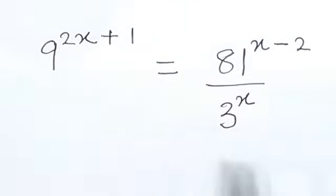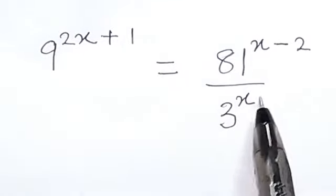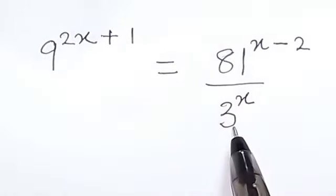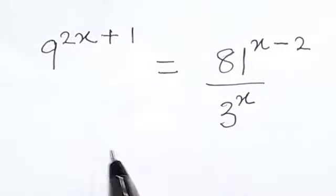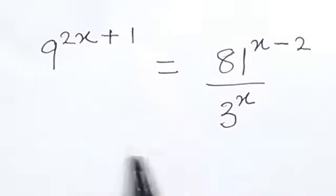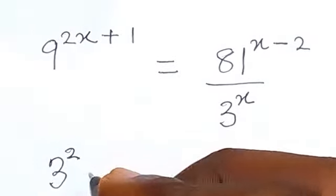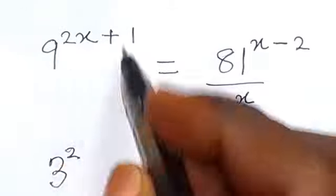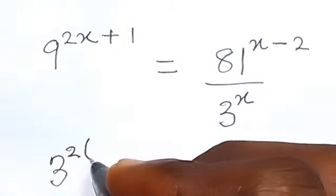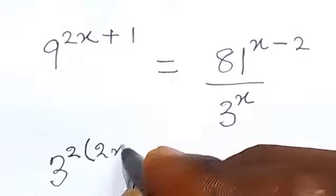Let's change this equation to have the same base on the left and right hand side. The smallest base we can change it to is base 3. When we change to base 3 on this side, 9 can be expressed as 3 squared, then we have this exponent here, that 2 there we multiply it as 2x plus 1.